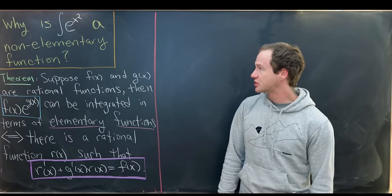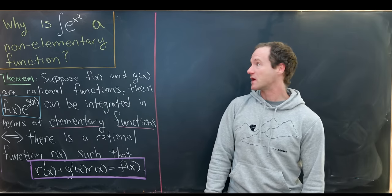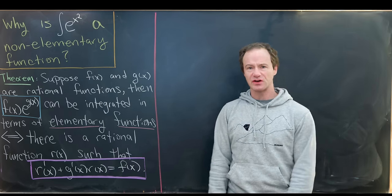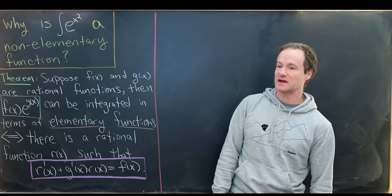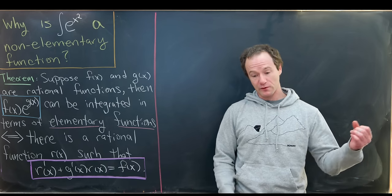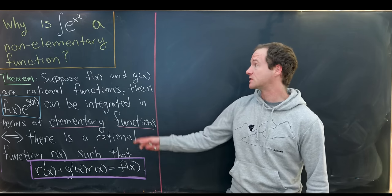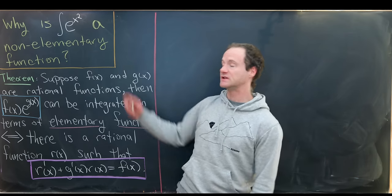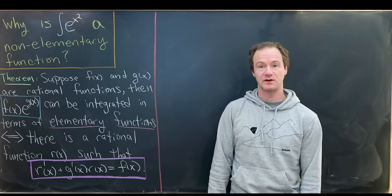What we want to show is that the antiderivative of e to the x squared is not one of these elementary functions. This is generally something that you learn about in a Calculus 2 or Integral Calculus class, but you don't really prove it. We're not going to prove it from scratch here — we're going to use a fairly powerful theorem, but we will provide more evidence than just saying this is a non-elementary function.